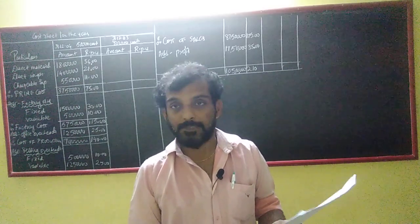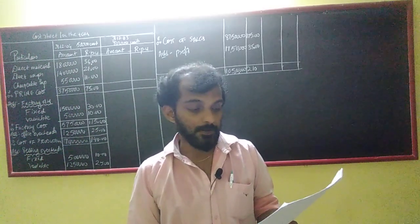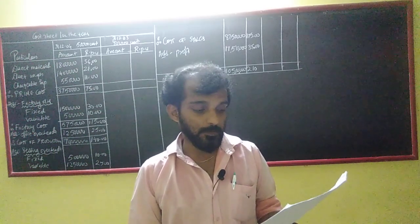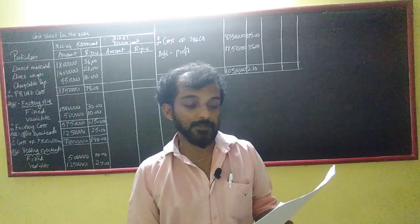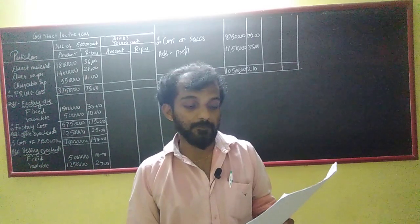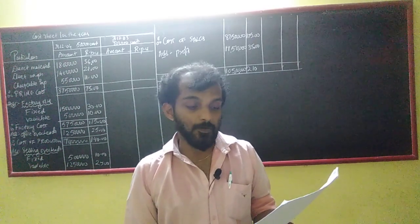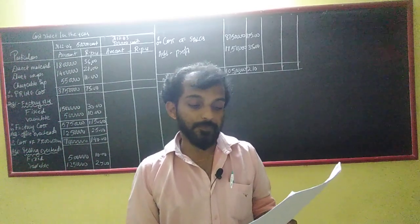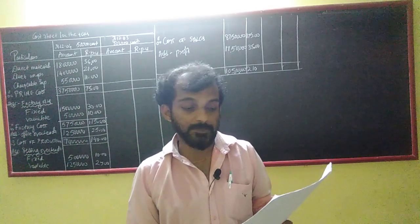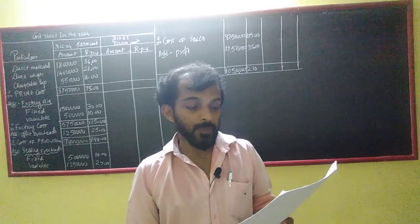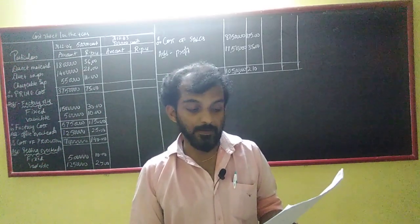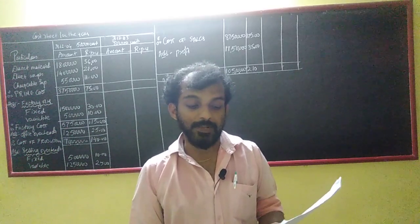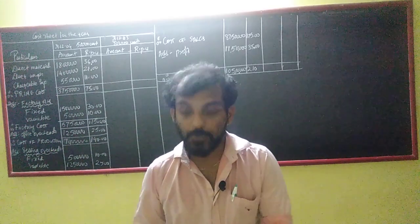Direct material: 36. Direct labour: 28. Chargeable expenses: 11. Factory overhead fixed for full year: 50. Factory overhead variable: 10. Office overhead fixed annual: 50,000. Selling overhead fixed. And variable: 25. Units produced and sold during the year: 50,000, for 2004, at a selling price per unit of Rs. 210.